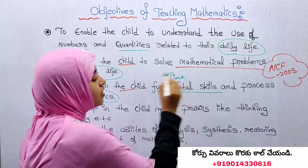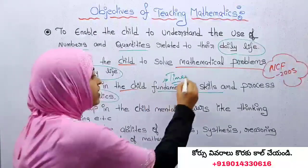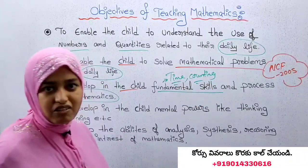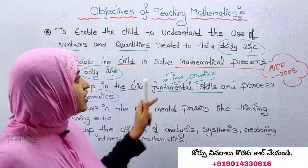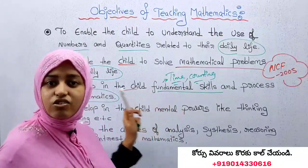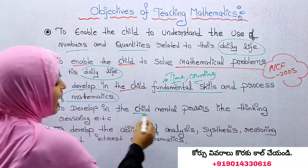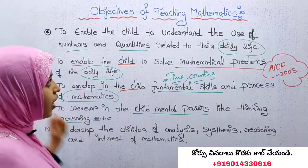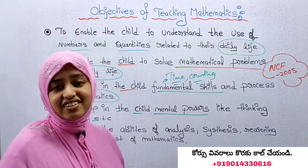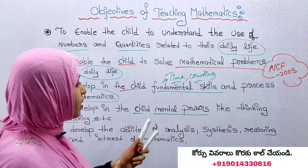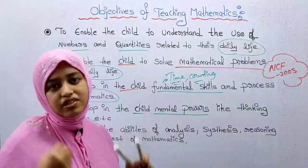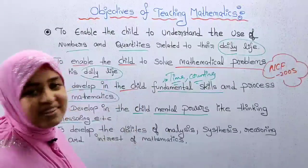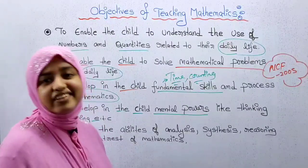Counting and fundamental skills in their daily life. The fourth objective is to develop in the child mental powers like thinking, reasoning, and so on. Mathematics teaching develops thinking, reasoning, critical thinking, and mental powers — reasoning, logical thinking.